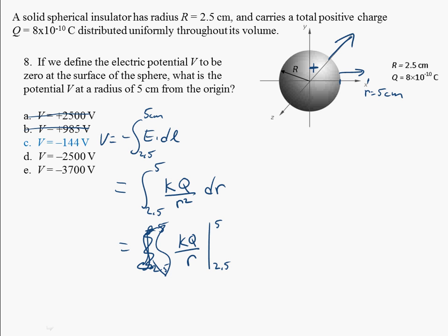Again, I'm being very sloppy with the minus sign because I know the answer is negative. So I can rewrite this. This is going to be equal to k, which is 9 times 10 to the 9th, Q, which is 8 times 10 to the minus 10th. And then I have 1 over r. So I have 1 over, and again, I want to put this in meters, so 5 times 10 to the minus 2 minus 1 over 2.5 times 10 to the minus 2.